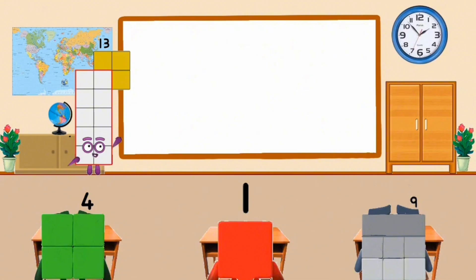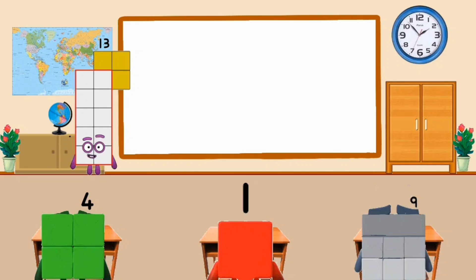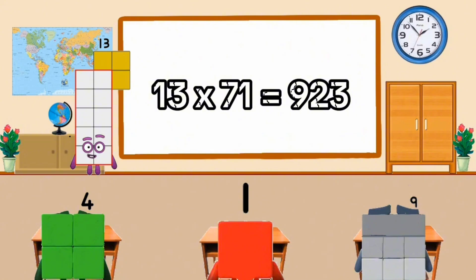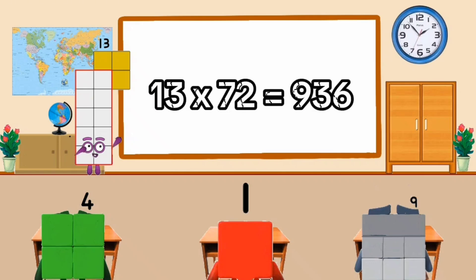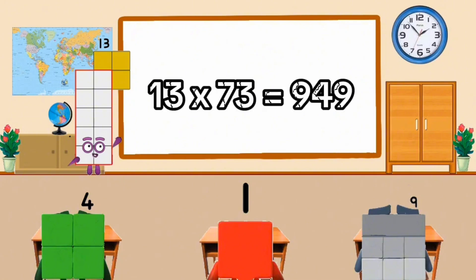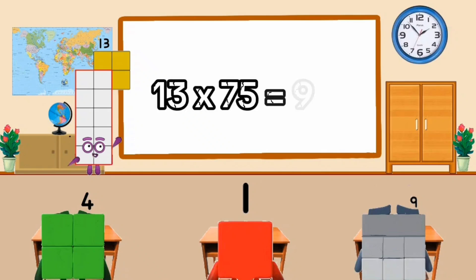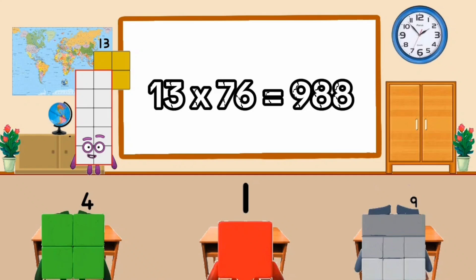13 times 70 equal 910. 13 times 70 equal 923. 13 times 73 equal 949. 13 times 74 equal 962. 13 times 75 equal 975. 13 times 76 equal 988.